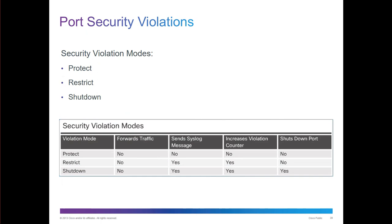Violation modes come in three types: protect, restrict, or shutdown — shutdown is the default. None of the modes forward traffic from violating sources. Restrict and shutdown both send messages to the syslog and increase the violation counter. The port only shuts down if shutdown is the violation mode. Restrict is often a better option — if you plug in an unapproved device, the port doesn't get turned off, so later if you plug in something approved, the port will allow traffic to pass.